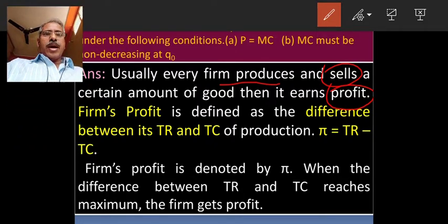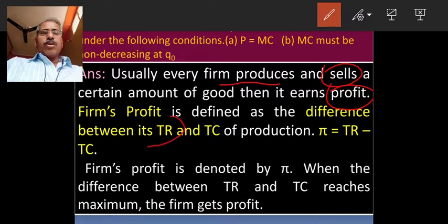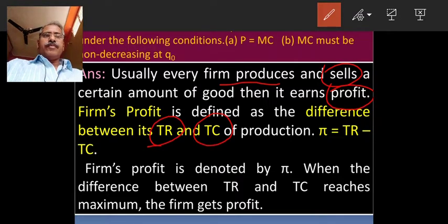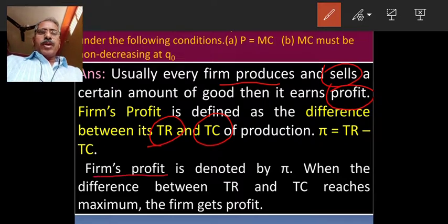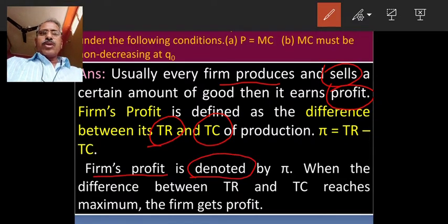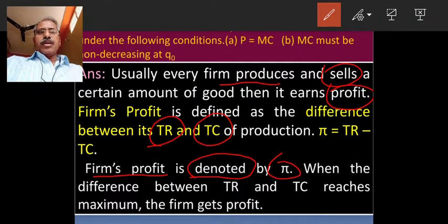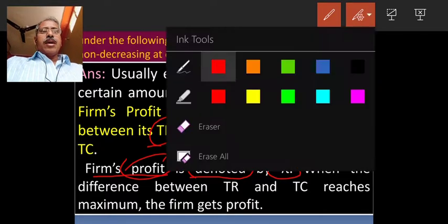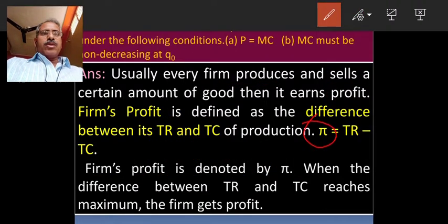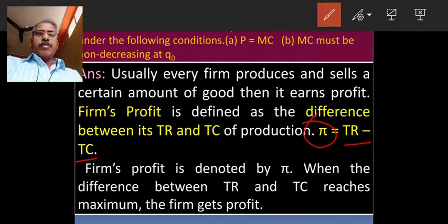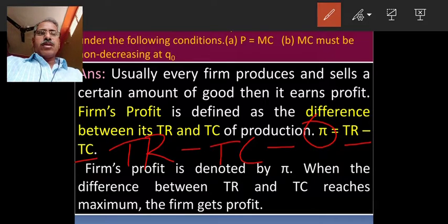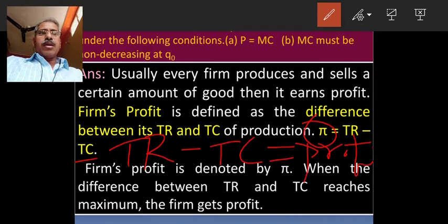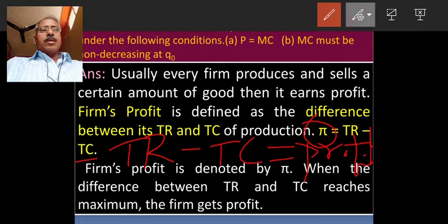The profit is defined as difference between the total revenue and total cost. The firm's profit will be denoted by π (pi). The formula for the profit calculation: π equals TR minus TC. Total revenue minus total cost equals profit.